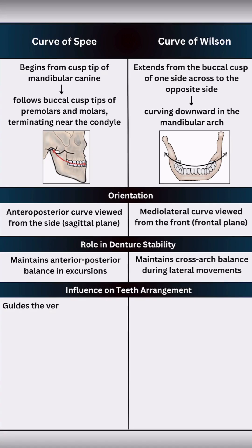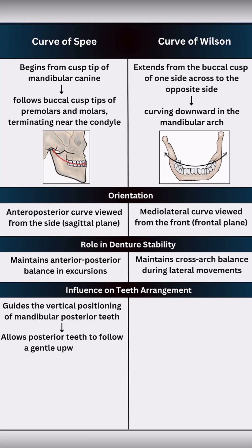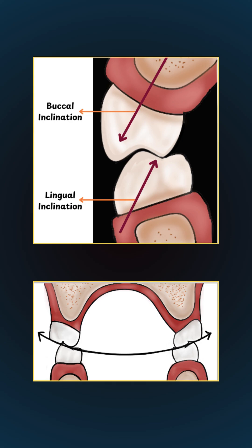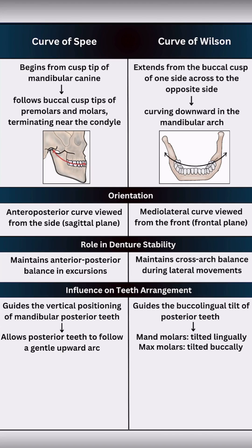For teeth arrangement, the curve of Spee guides the vertical positioning of the mandibular posterior teeth. The mandibular molars, especially the second molars, are set slightly elevated posteriorly to follow this anterior-posterior arc. The curve of Wilson influences the buccolingual tilt of posterior teeth, especially the lingual inclination of mandibular molars. Maxillary molars are tilted buccally to maintain opposing cusp contact.